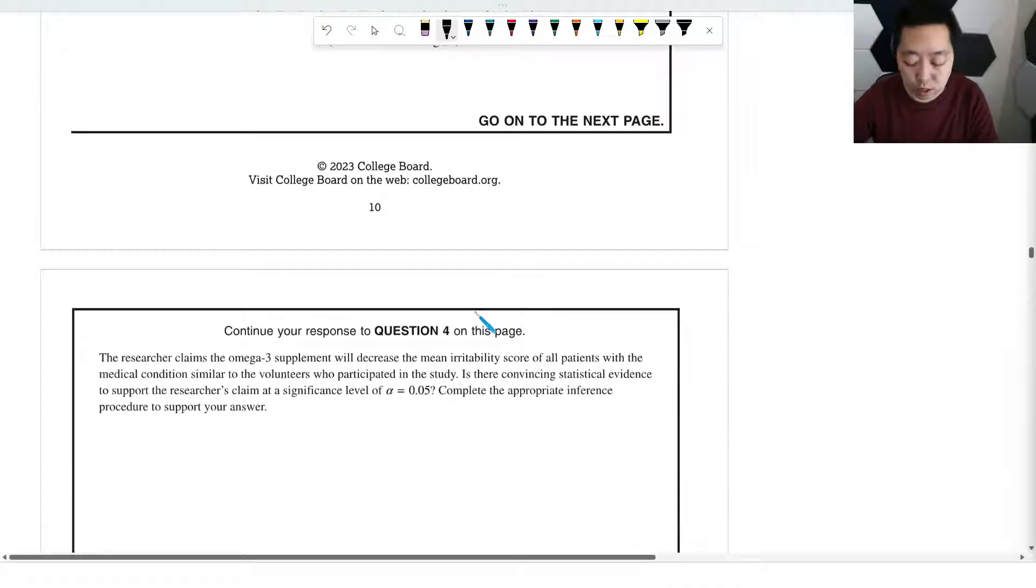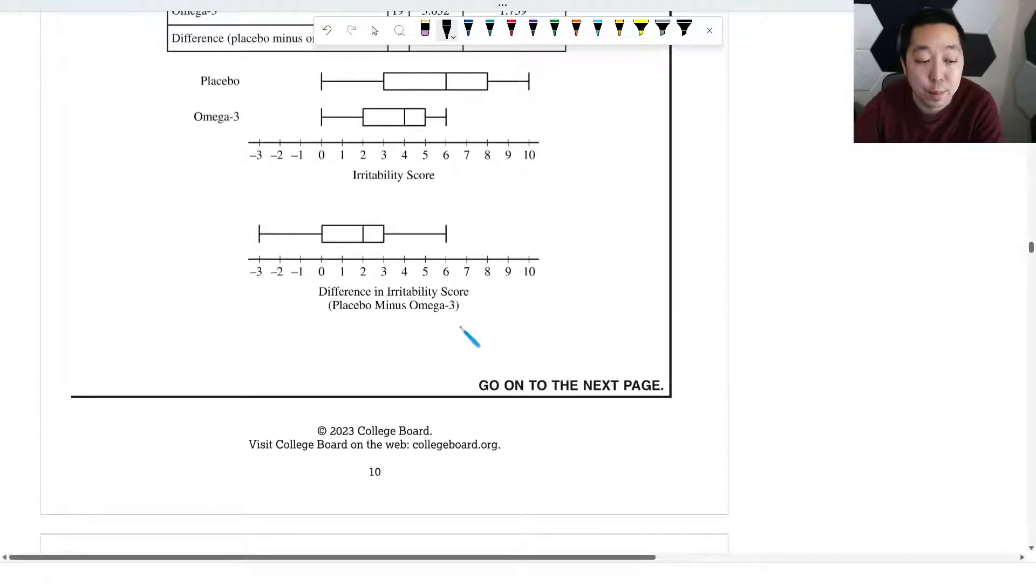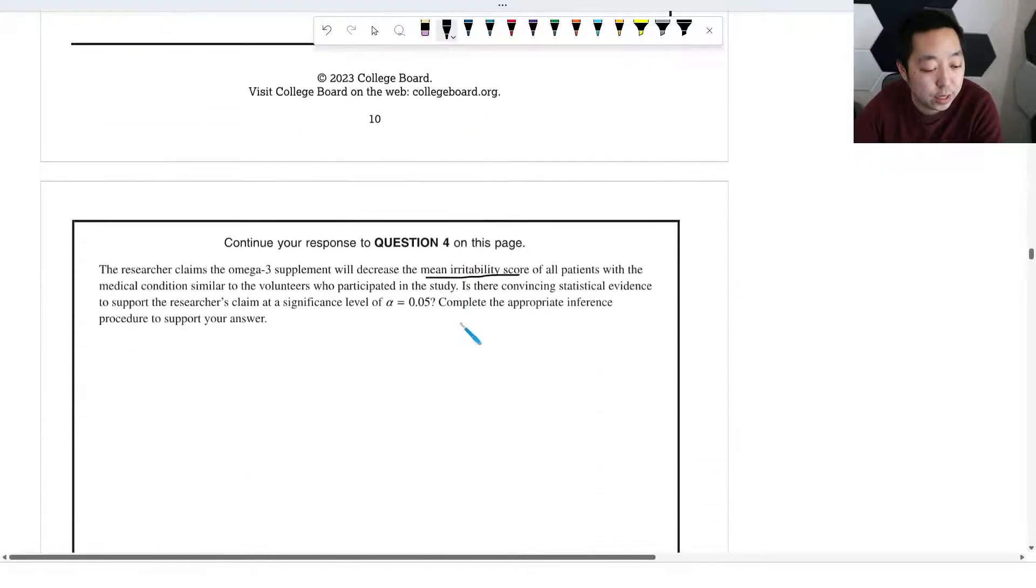So let's set up what we're looking for here. The mean irritability score - these are sample means, it is not a proportion. It's a mean irritability score, so it's some kind of number, not a percentage or anything like that.